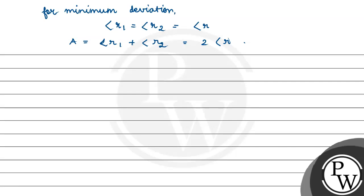Now we also know that angle of prism A plus delta, means deviation, angle of deviation, that is equal to i1 plus i2. For minimum deviation, i1 and i2 is equal, let's suppose i.